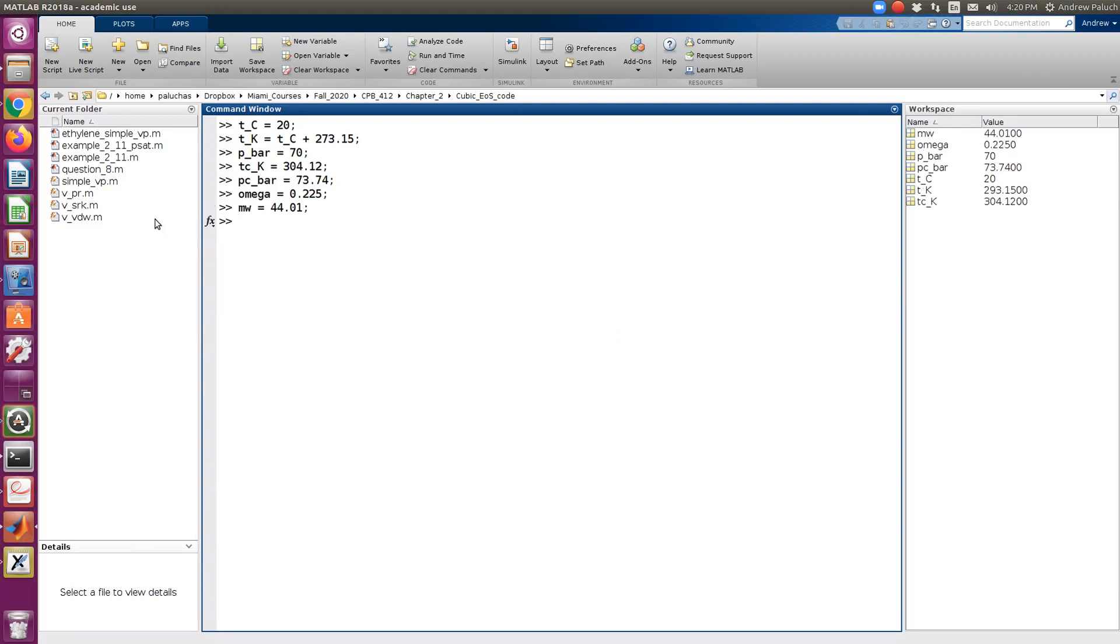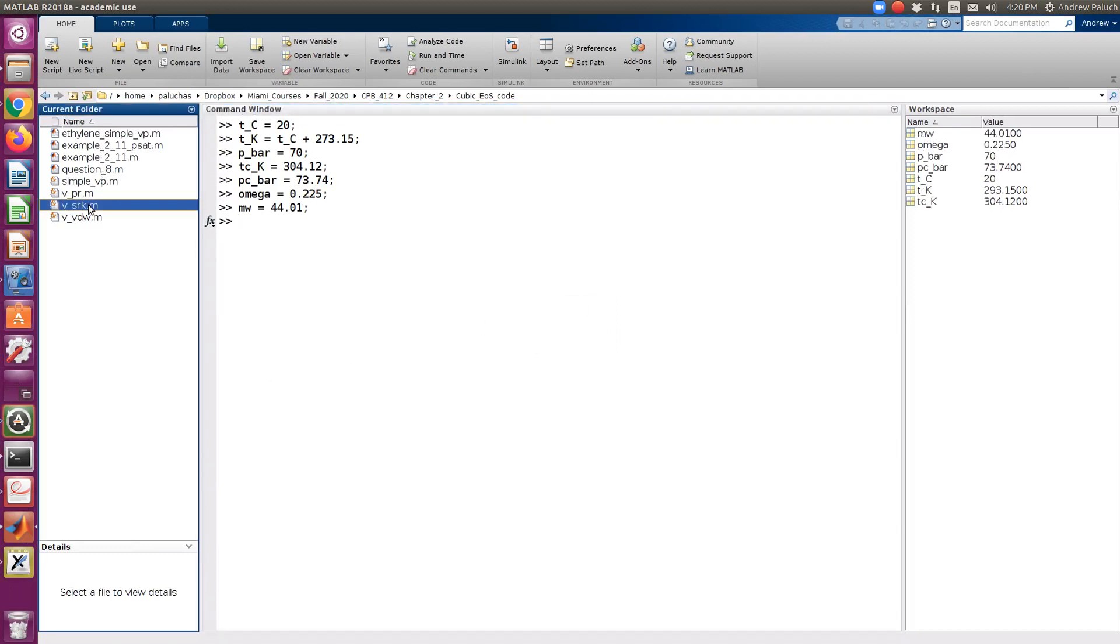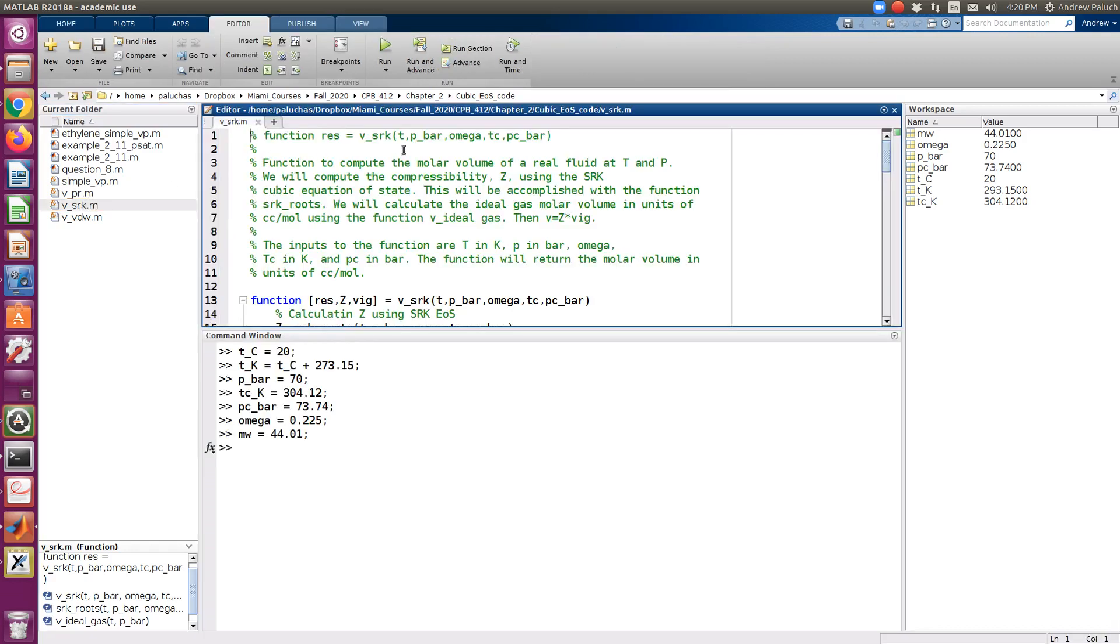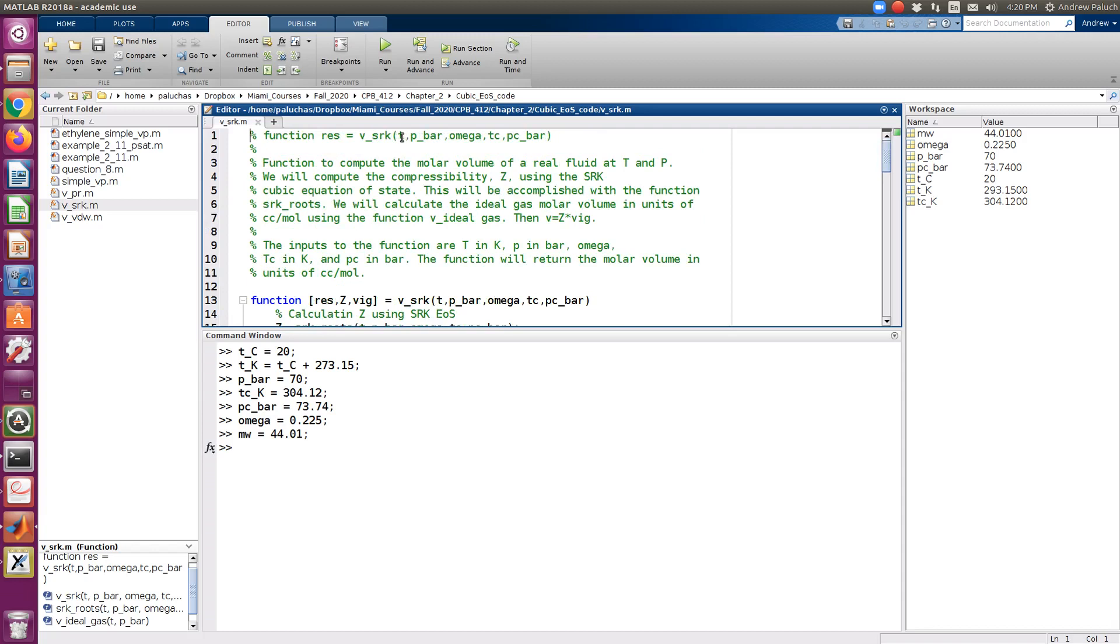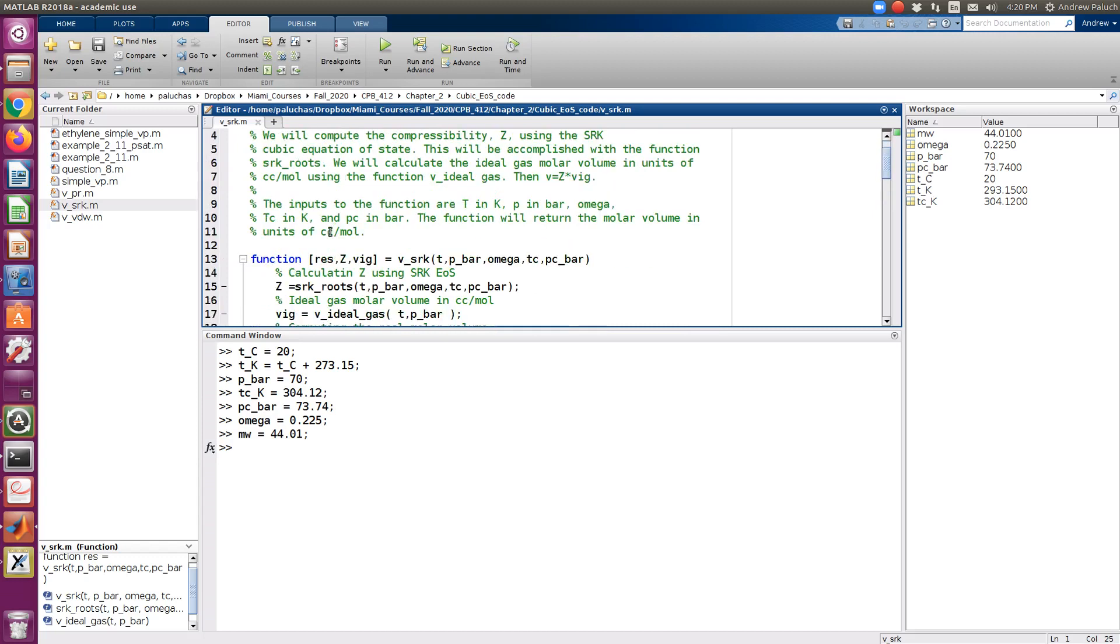Alright. So now I'm going to open up my black box. So we're going to use the SRK equation of state. So SRK equation of state, again, it's going to have inputs of temperature, pressure, and I have it listed as omega, TC, and PC. And then in terms of units, the units of temperature should be in Kelvin. Temperature in Kelvin. So I'm just going to literally copy this. And then note, this will return Z, V, but then you could also get it to return Z and V ideal gas if you wished.